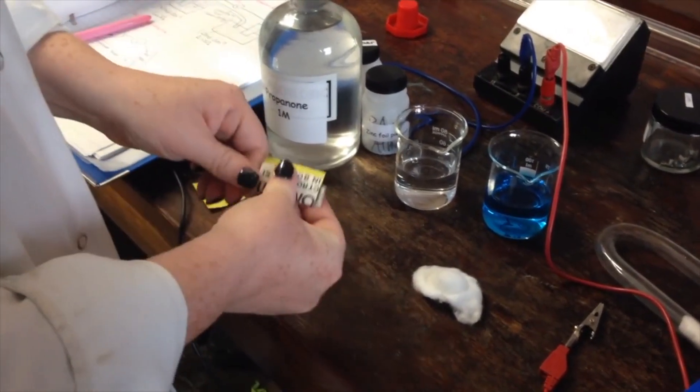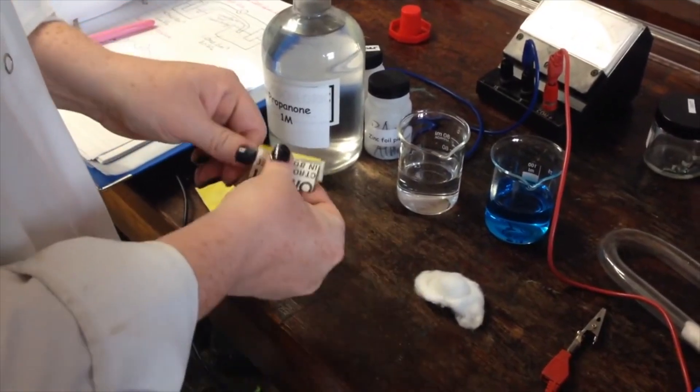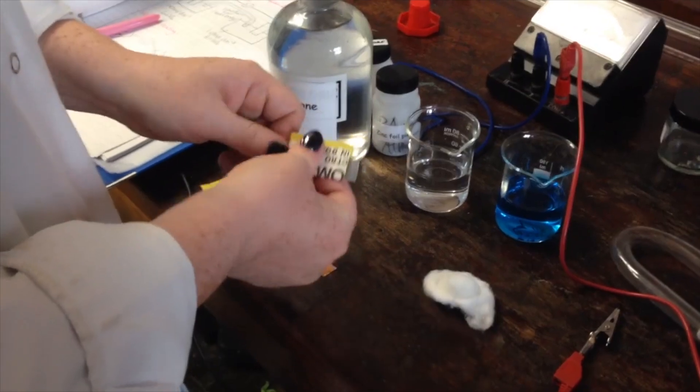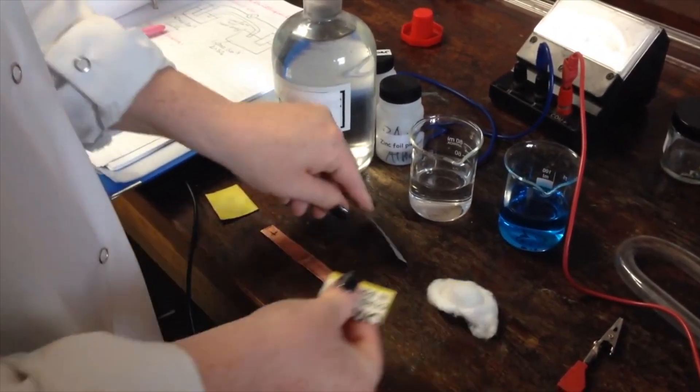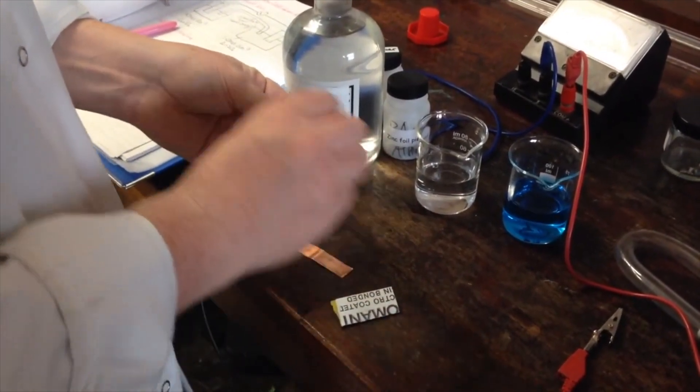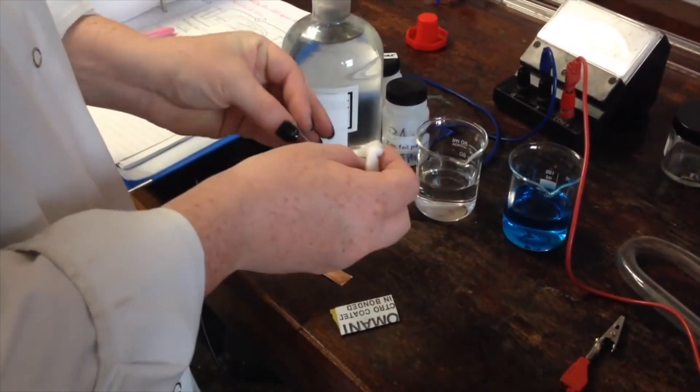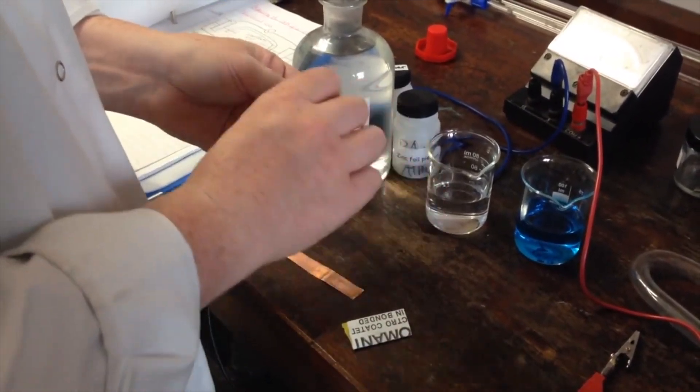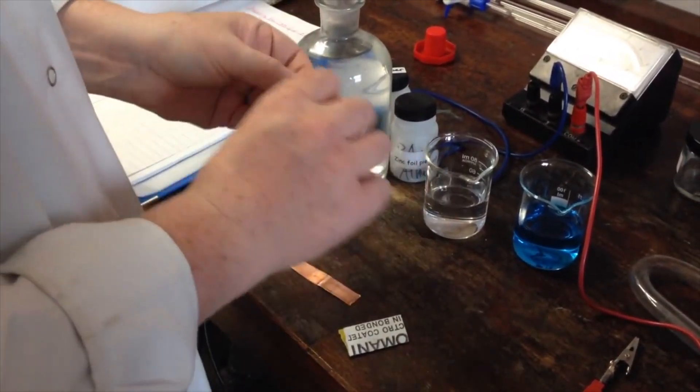The first thing you need to do is to sand them down with bits of emery paper to get any oxidation off the outside or to get any leftover reaction from last time. And then with a bit of propanone on cotton wool, just wipe those down to evaporate off anything else on there and make sure these are as clean as they can be for your experiments.